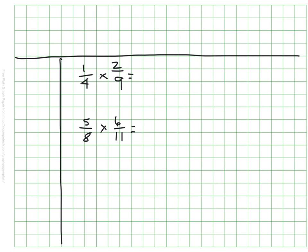Use the algorithm that we just shared on these examples on these number sentences to complete them with the answer. So one-fourth of two-ninths, five-eighths of six-elevenths. Take a minute and solve the problems. And when you're ready, unpause the video.